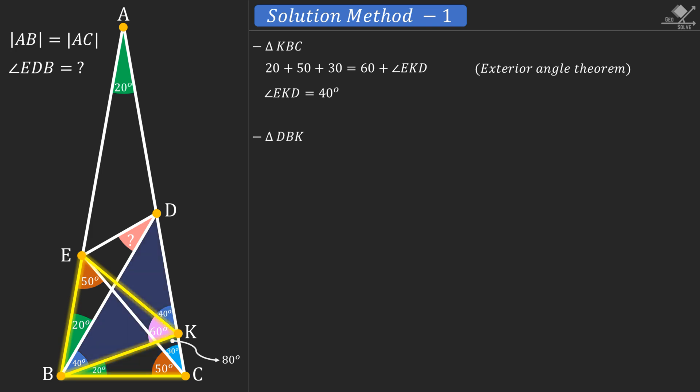Now focus on this triangle. We can find angle D of this triangle using the sum of internal angles. And from here angle D will be 40 degrees. Let's also show that on the question.